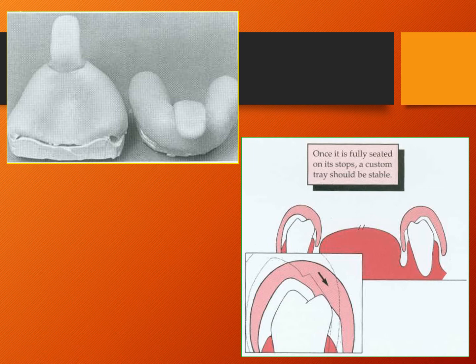The custom tray should extend 3 to 5 mm cervical to the pre-gingival margin, be stable on the cast with stops, maintain an impression thickness of 2 to 3 mm, be smooth with no sharp edges, and have a sturdy handle shaped to fit between the patient's lips. To avoid distortion from continued polymerization, the tray should be made at least 9 hours before use. If needed urgently, it can be placed in boiling water for 5 minutes and allowed to cool at room temperature, or a light-polymerized tray can be made.